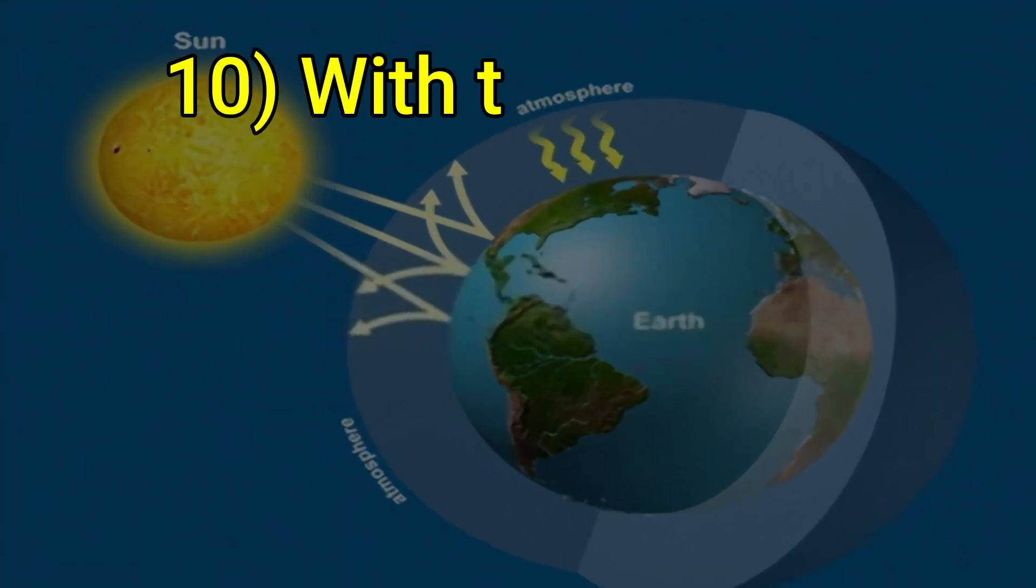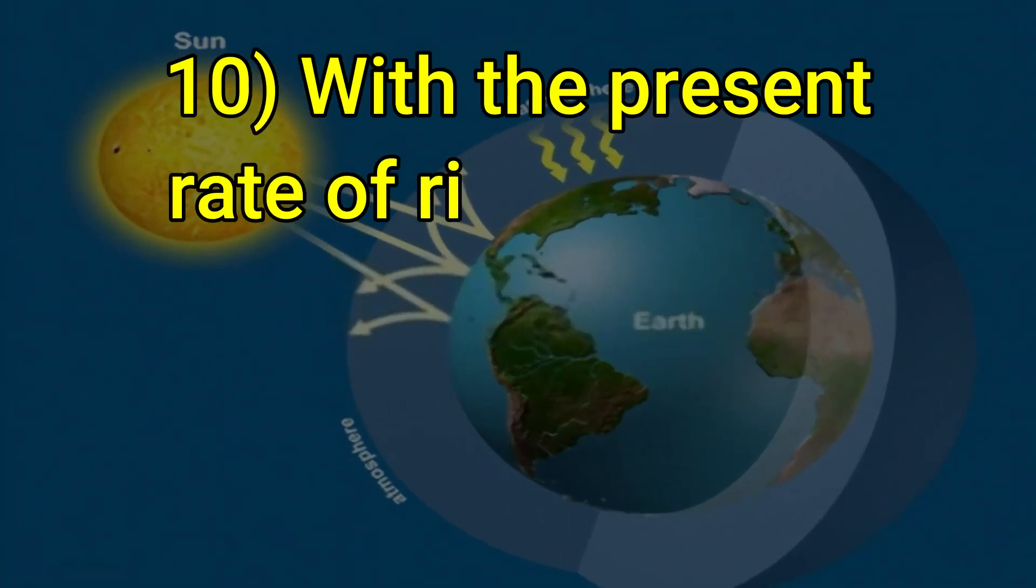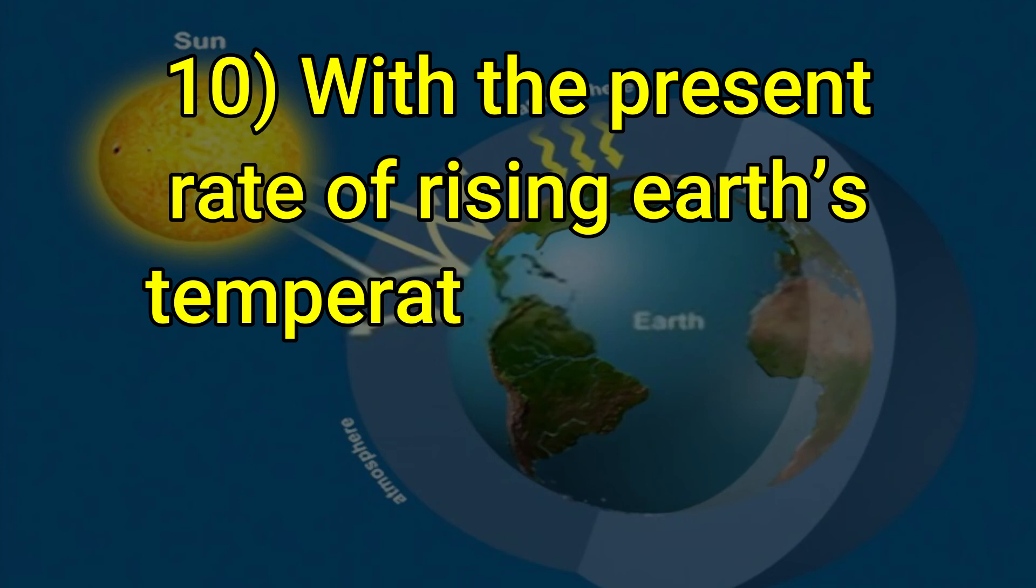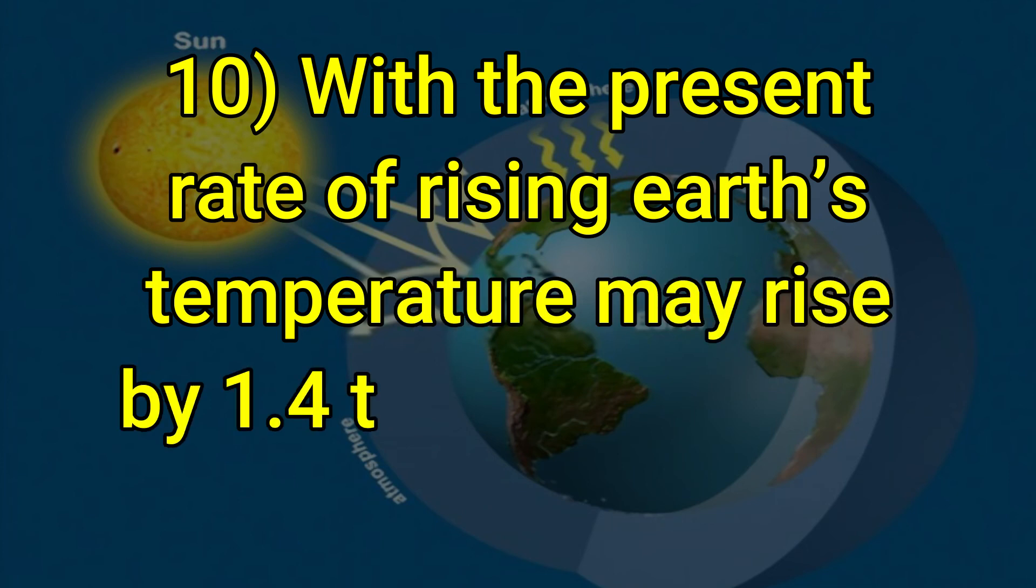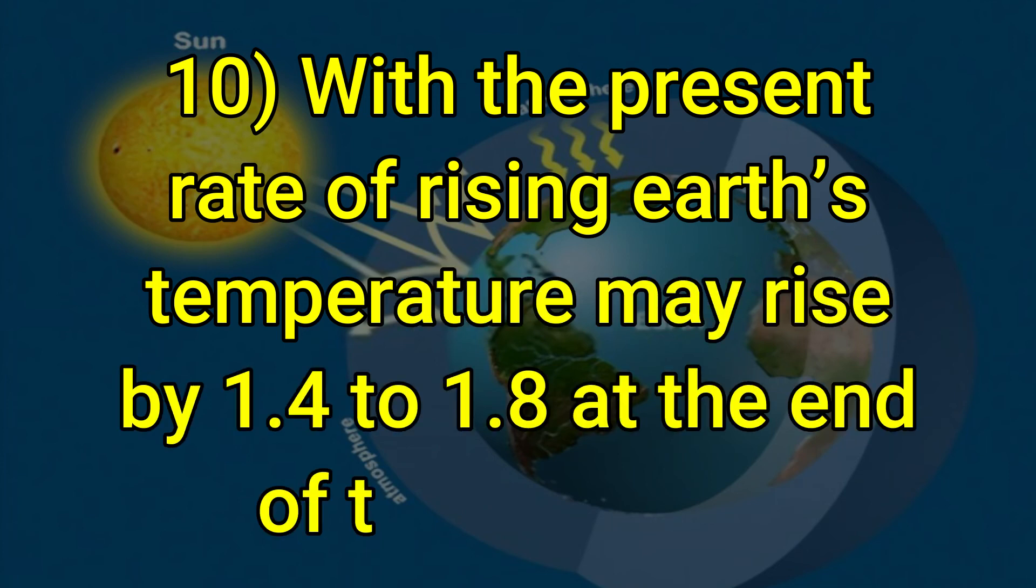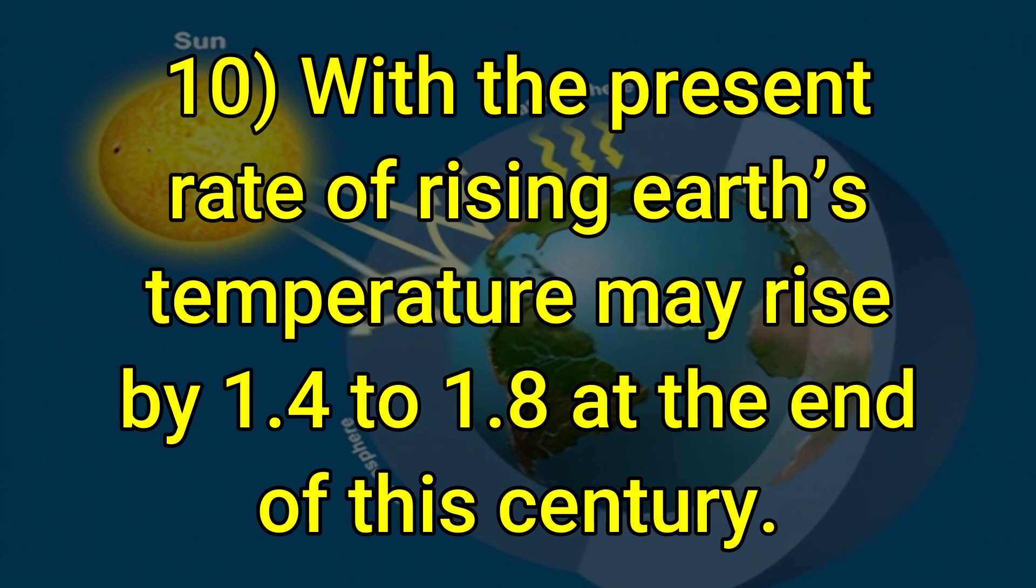With the present rate of rising, earth's temperature may rise by 1.4 to 1.8 degrees at the end of this century.